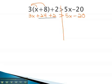After distributing, we can combine like terms on the left side, giving us 3x plus 26 is greater than 5x minus 20.